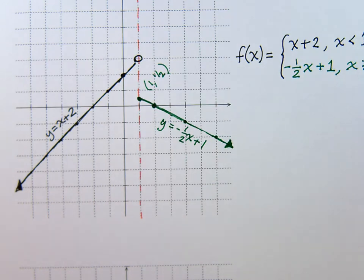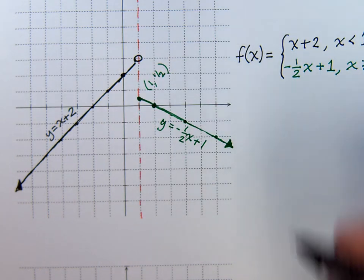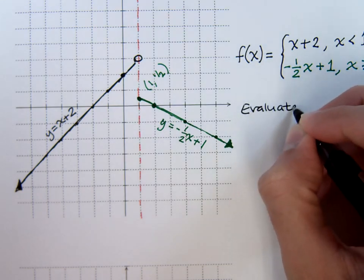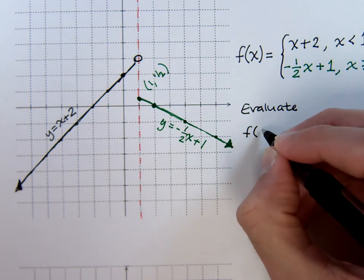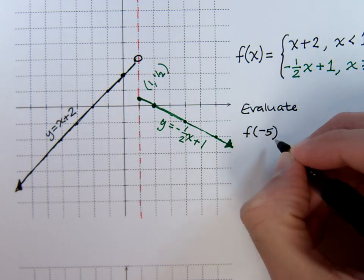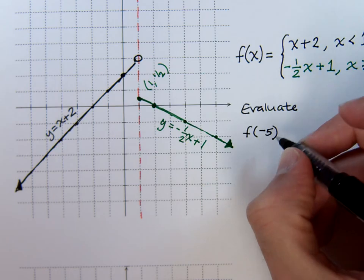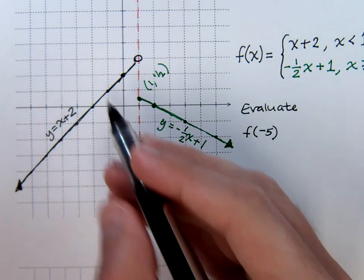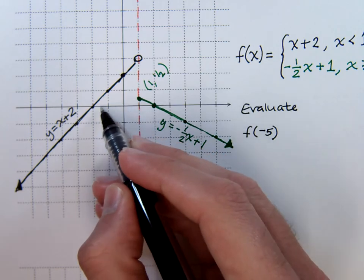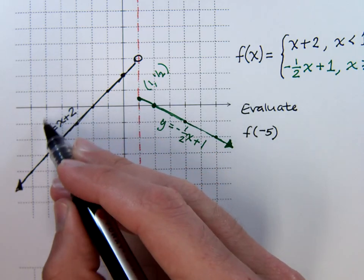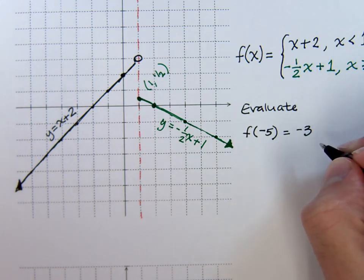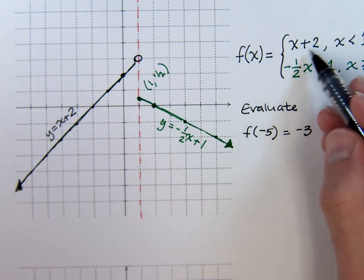When I'm looking at this guy and I want to evaluate this function, I have to know where the different x's go. If I were to evaluate f of, say, negative 5, the piece that takes negative 5 is going to be this guy right here, the black line. And if you actually come over here to an x equals negative 5, you would find that the y value is negative 3, which is the same thing you would have if you plugged it into this first part.